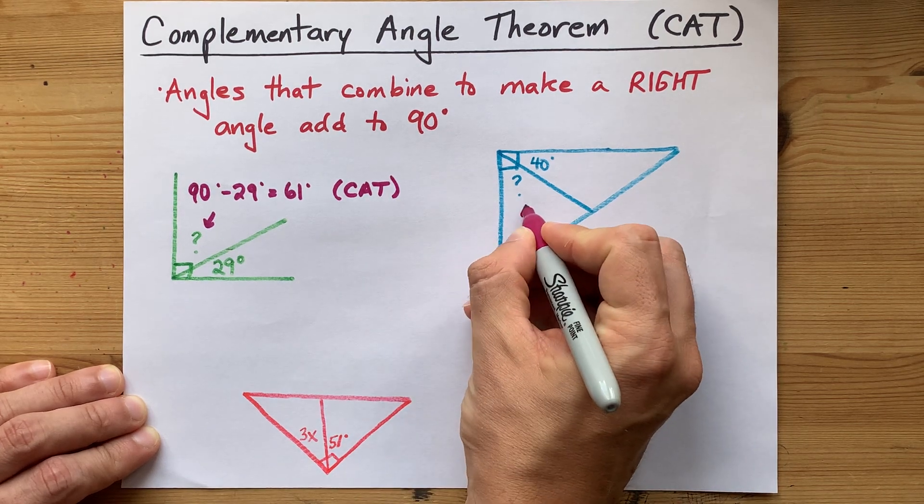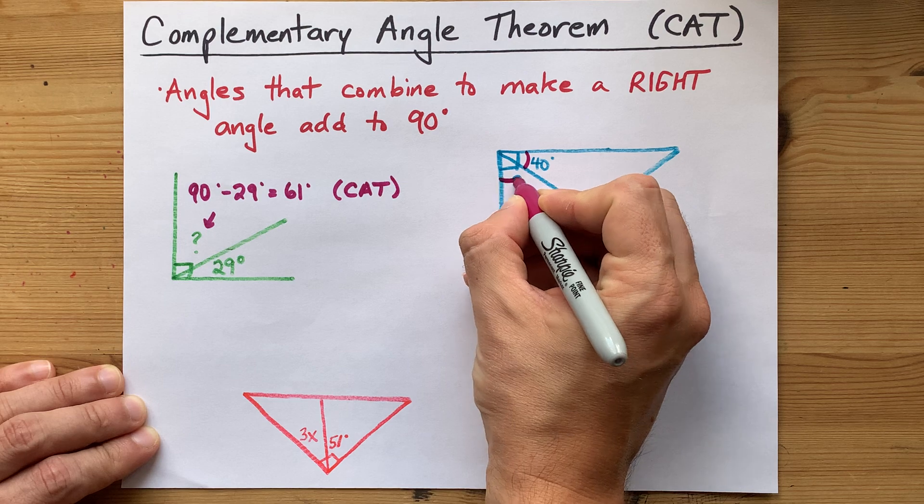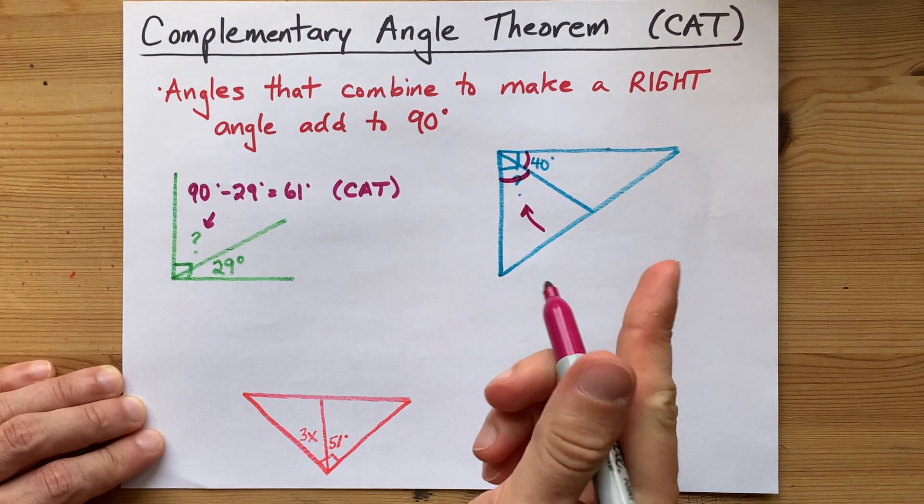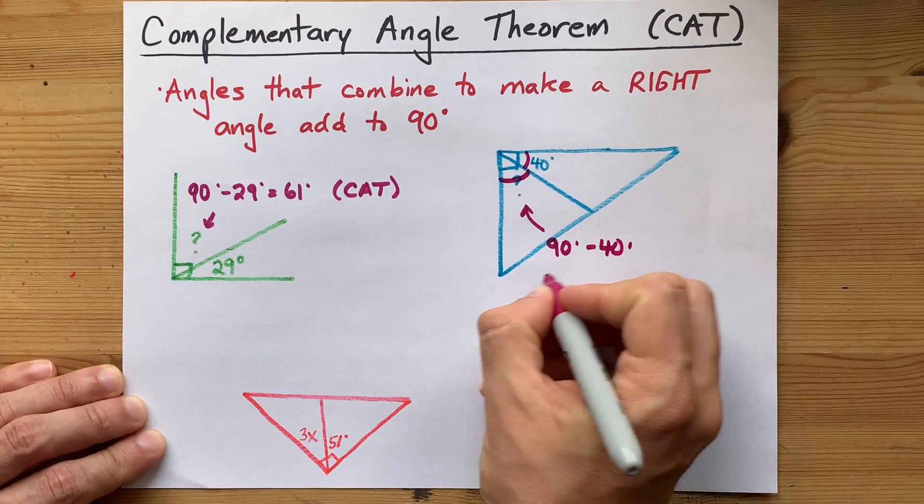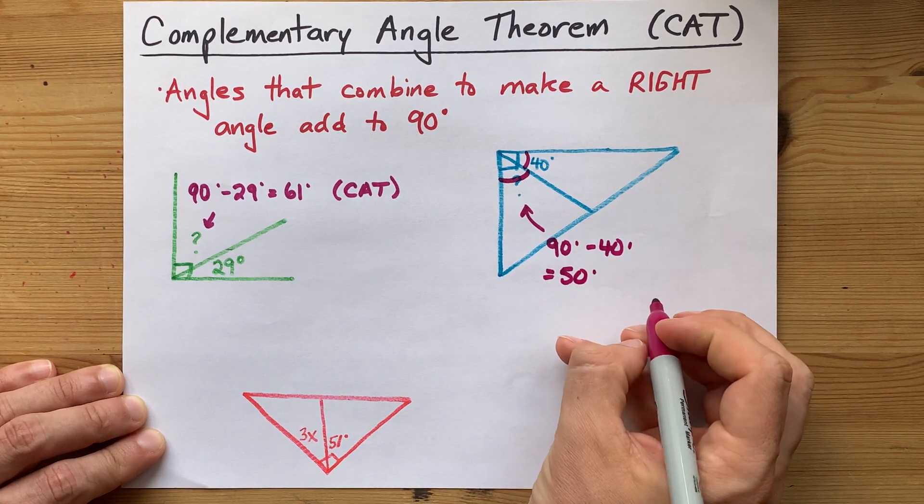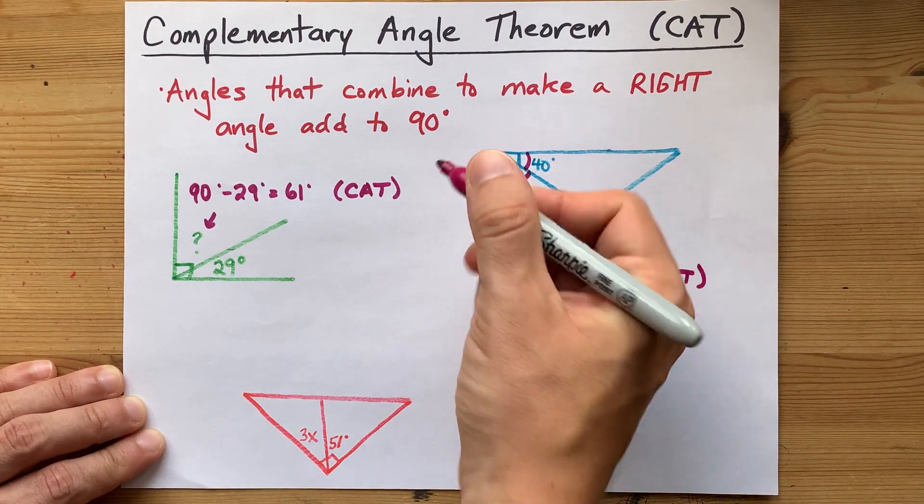Let's do it again here. This is also a right angled triangle. This one's worth 40. How much is that worth? You can probably do that in your head. But 90 minus 40 gives you a 50 degree angle. CAT, cats love corners.